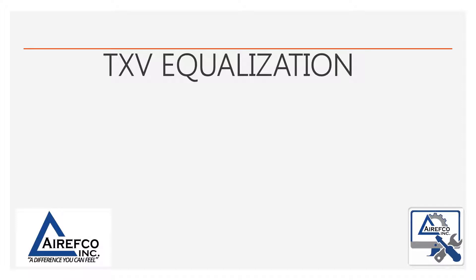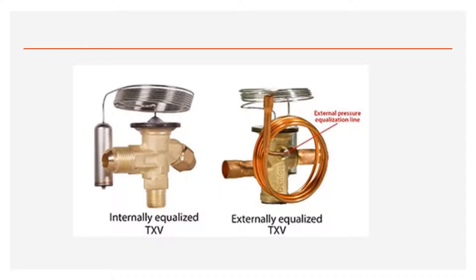TXV equalization, internal or external. It's fairly easy to distinguish an internally equalized TXV from an externally equalized TXV. The externally equalized TXV has a wrap of copper tubing, which is the equalization tube that needs to be routed on the other side or the outlet of the evaporator coil.